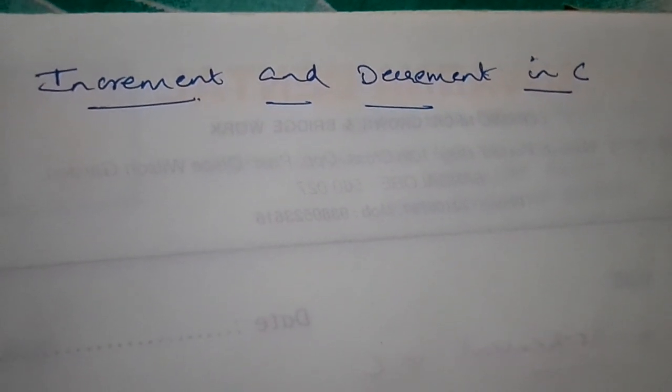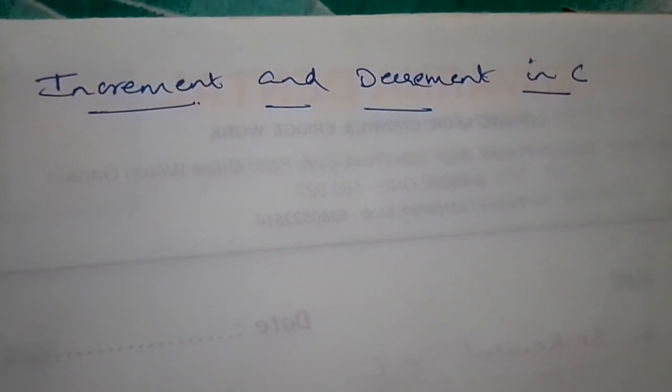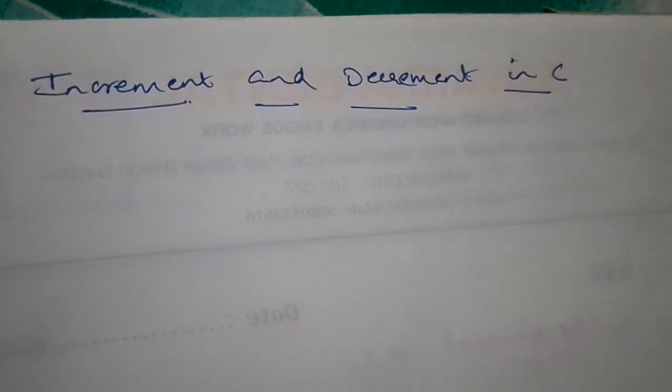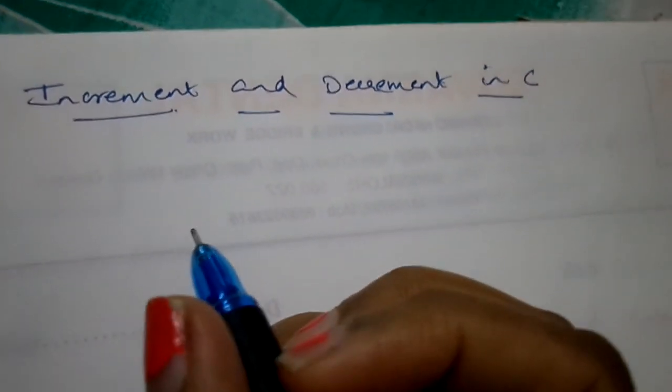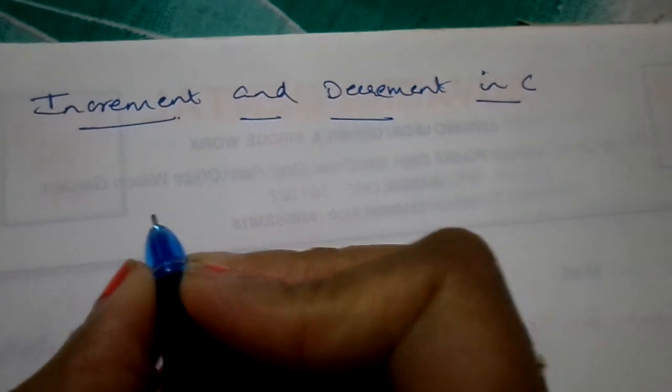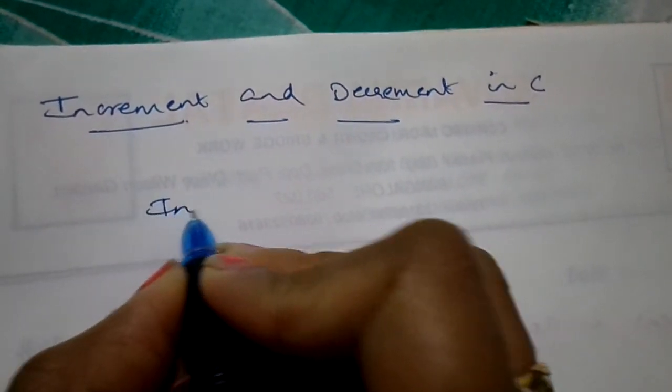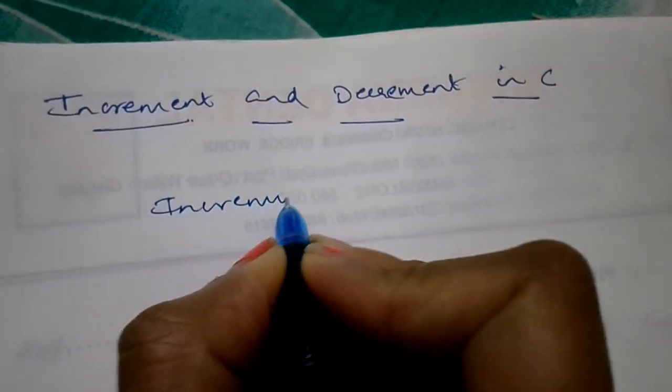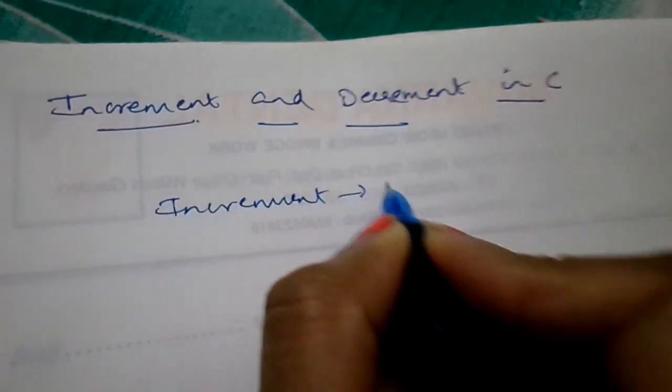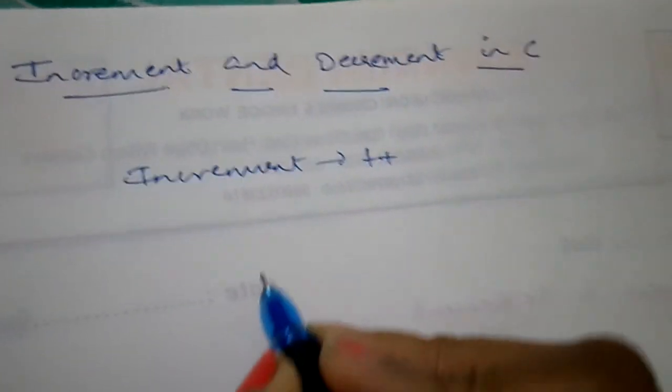Hello friends, today I'm going to teach you the meaning of increment and decrement operators in C programming. An increment operator is basically used to add, and a decrement operator is used to subtract.